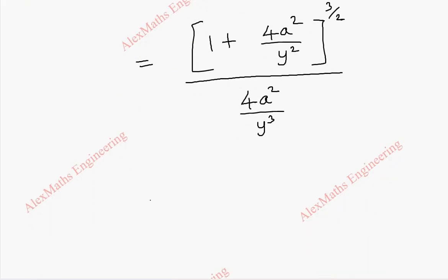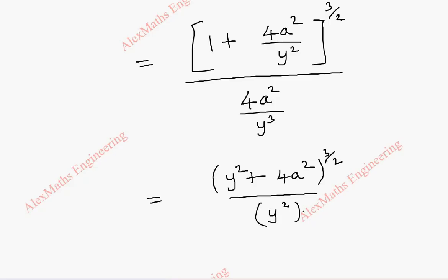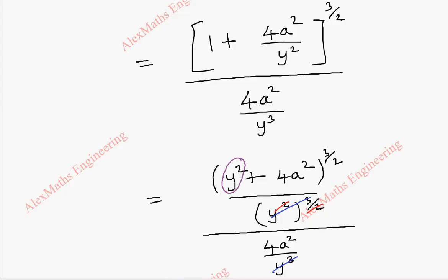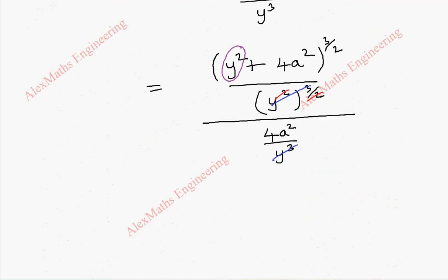In the denominator we take minus 4a square by y cube. In the numerator, we are going to take LCM, so it is y square plus 4a square by y square, with power 3 by 2. Taking the numerator and denominator powers separately, we can cancel y square with y square, and y cube with y cube. Then we can replace the value of y square from the question, which is 4ax.